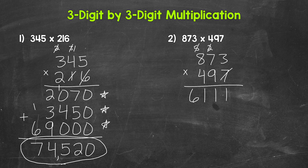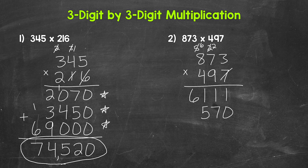We are moving over to the nine in the tens place, so we need a zero. Then we do nine times three, which is 27. Carry the two. Then we have nine times seven, which is 63, plus two is 65. Carry the six. Next, we have nine times eight, which is 72, plus six is 78. And we are done with this nine, done with this two, and done with this six.